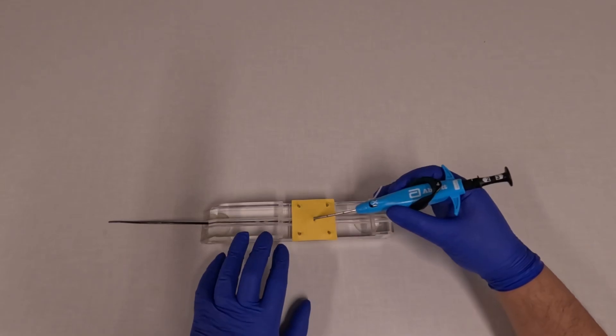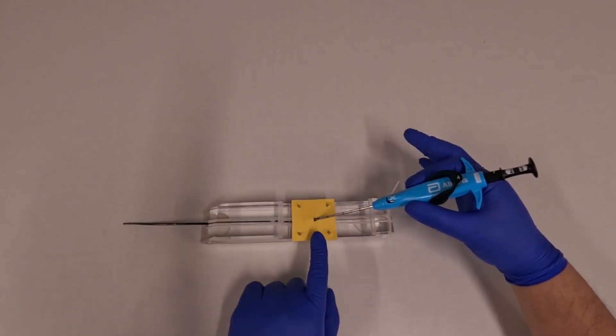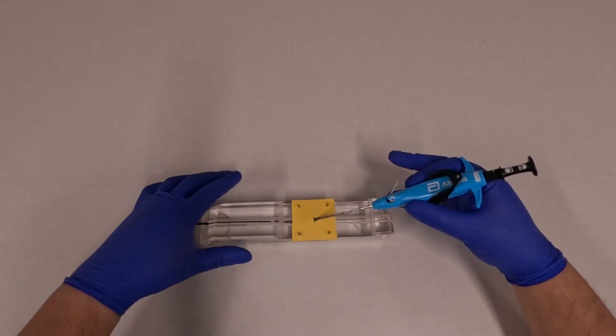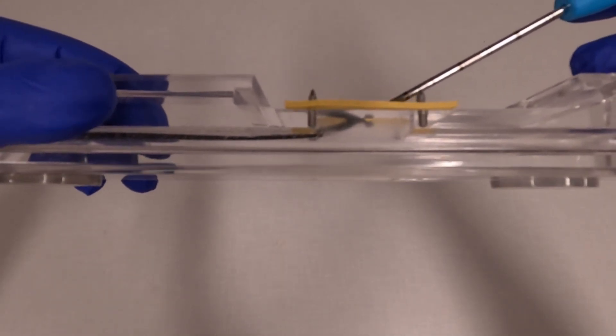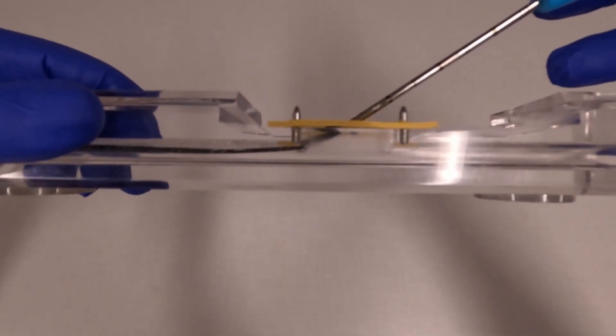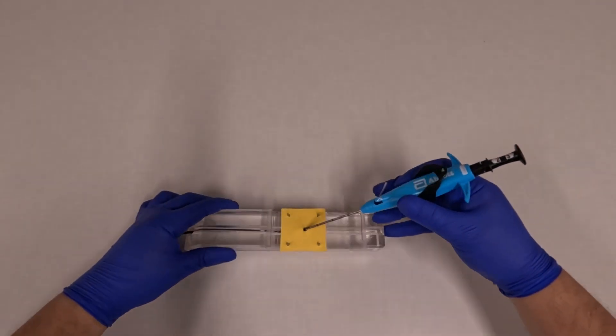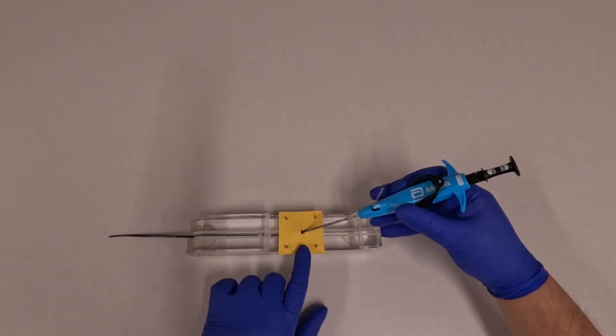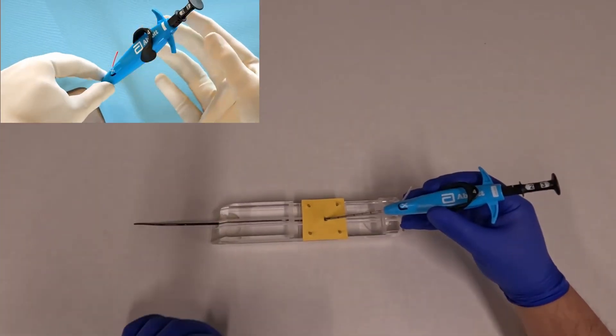Next, you're going to pull back very slightly on the device until the footplate abuts against the inside of the lumen. You can see here that the footplate has moved up and it's just inside the arteriotomy now. At this point you're going to maintain pressure holding the device at that angle about 45 degrees.